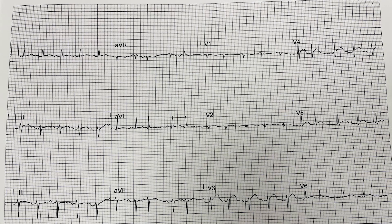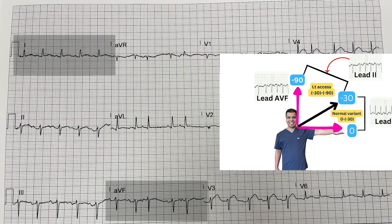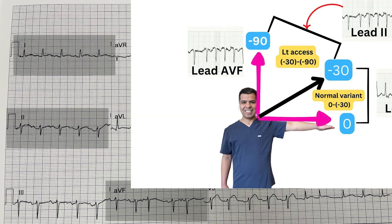In this EKG, lead 1 QRS net deflection is positive, going in the direction of our stretched left arm at 0 degrees. Lead AVF QRS is negative, meaning it's going upward through our head at minus 90 degrees. The axis is between 0 and minus 90 degrees. To decide if it's a normal variant or left axis deviation, we look at lead 2. The QRS net deflection in lead 2 is negative, so the axis is between minus 30 and minus 90 degrees — there is a left axis deviation. In such a case, this is also called a left anterior hemifascicular block, because there is left axis deviation and a negative QRS deflection in lead 2.